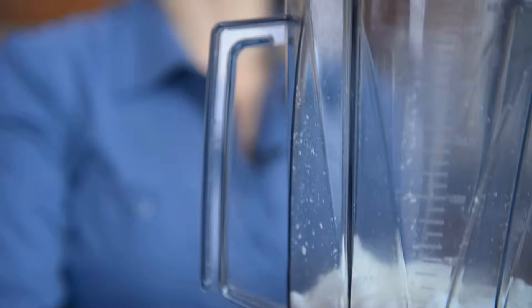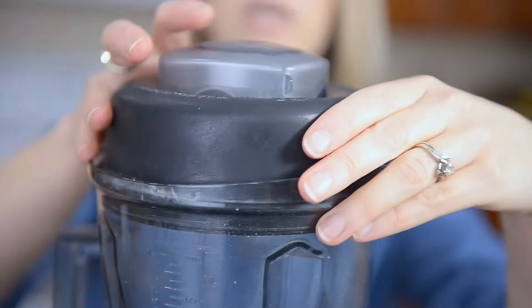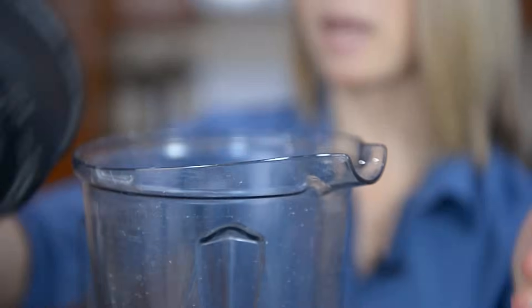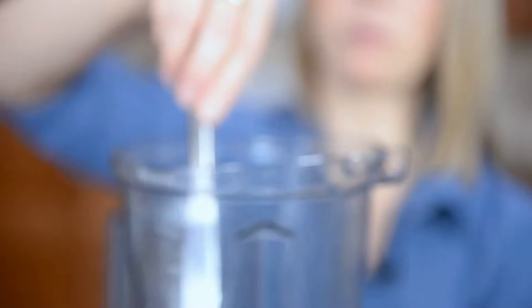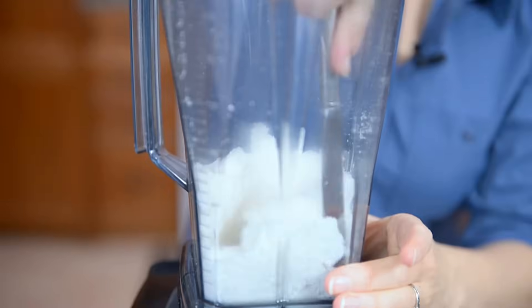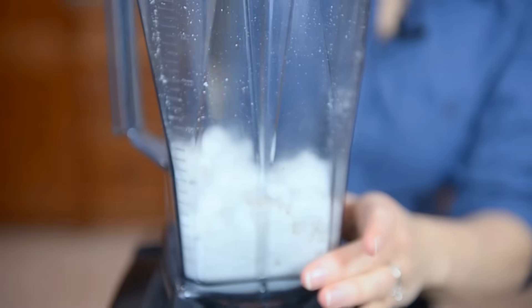Now, as soon as I hear that sound like it's not really moving the ingredients around, I can either use my tamper or what I like to do is just stop the Vitamix and use a knife and just kind of get all those corners back in the middle.